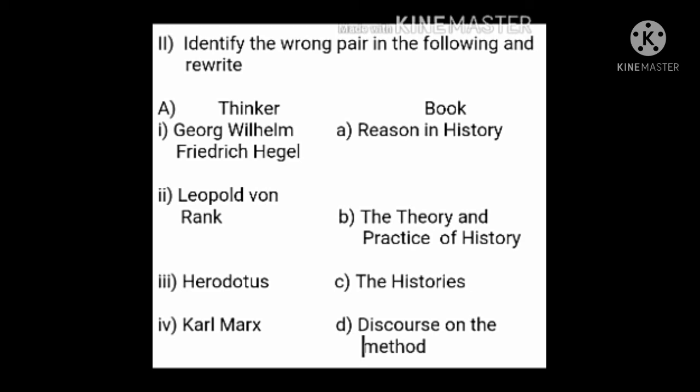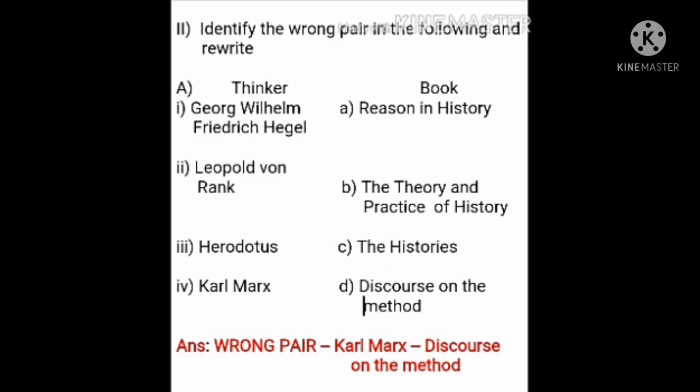Let's start with the first identify. First: George Wilhelm Friedrich Hegel — Reason in History. Second: Leopold von Ranke — Theory and Practice of History. Third: Herodotus — The Histories. Fourth: Karl Marx — Discourse on the Method. Among these four, the wrong pair is the fourth one: Karl Marx is paired with Discourse on the Method, but Karl Marx actually wrote Das Capital. So write down the wrong pair: Karl Marx — Discourse on the Method.